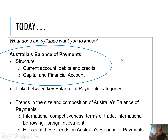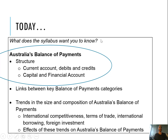We are looking overall at the current account and the capital and financial account. This image from your textbook — see the source cited down the bottom — is very useful in trying to understand it. The balance of payments consists of two accounts: the current account and the capital and financial account.